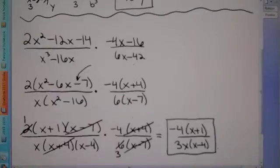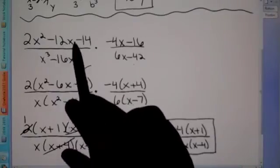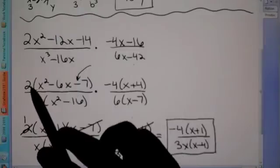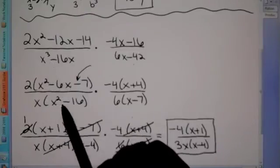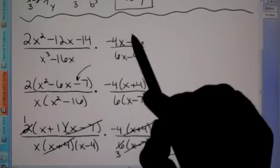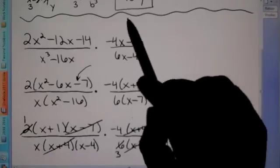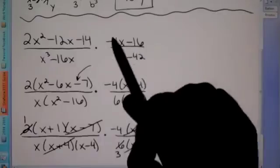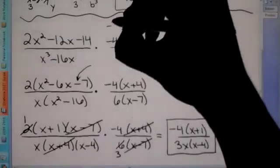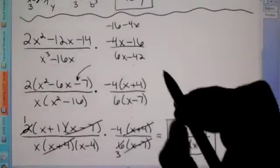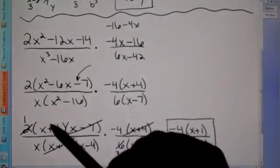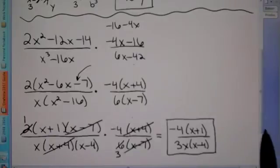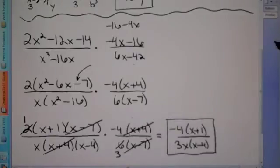Quite a few steps there. Factor anything you can on top: we factored out the 2, then broke it into 2 parentheses. On the next fraction we factored out the X, then broke it into 2 parentheses. We rearranged the negative 16 minus 4X to negative 4X minus 16, then factored out the negative 4. On the bottom we factored out the 6. Then we just started canceling what we could and multiplied across what was left.